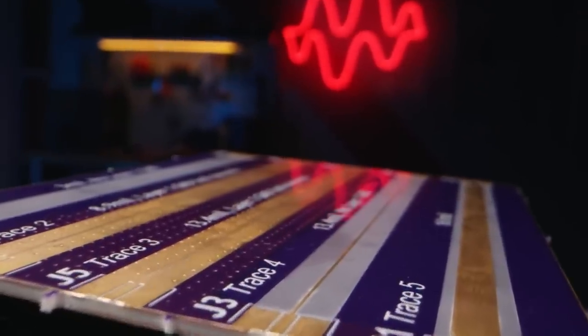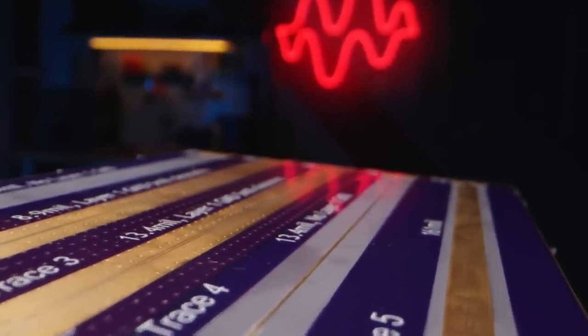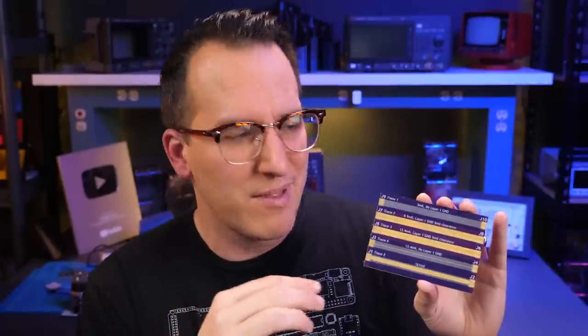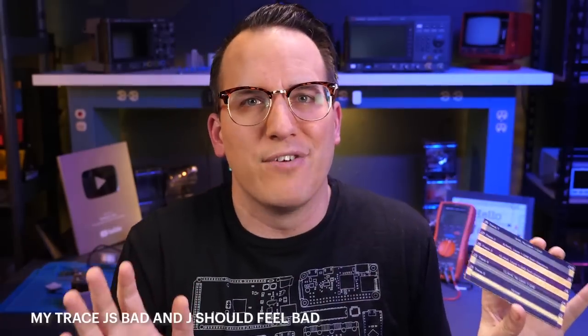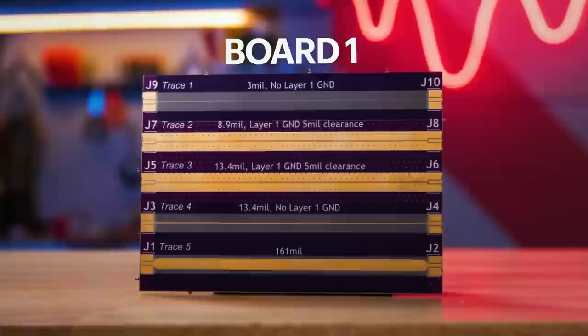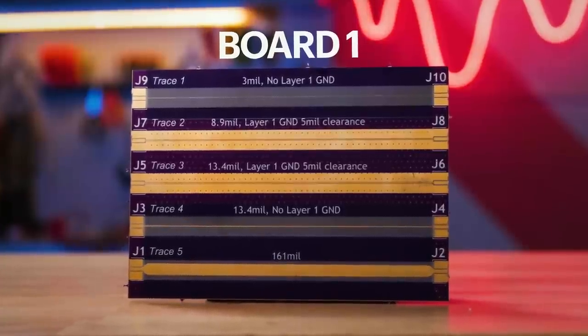Some of these traces are good — they're close to 50 ohms — and some of them are bad, just objectively bad, but I have no idea which is which. I have some guesses, and I bet you might too if you look closely. But look at my glasses — I'm obviously a man of science. I don't want to guess, I want the facts. I want to know which traces are good, which ones are bad and why, and could I make a good trace bad?